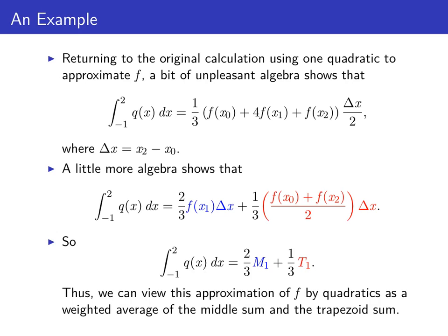So we can actually view this Simpson's approximation, this approximation with quadratics, as a weighted average of the midpoint sum and the trapezoid sum.